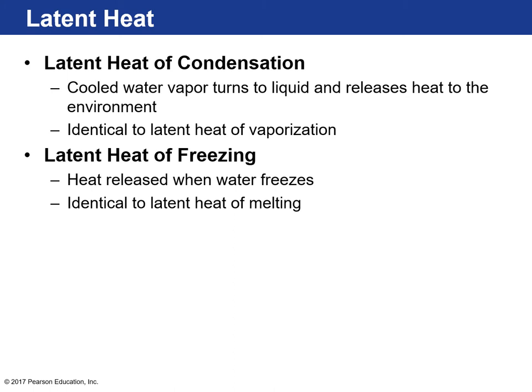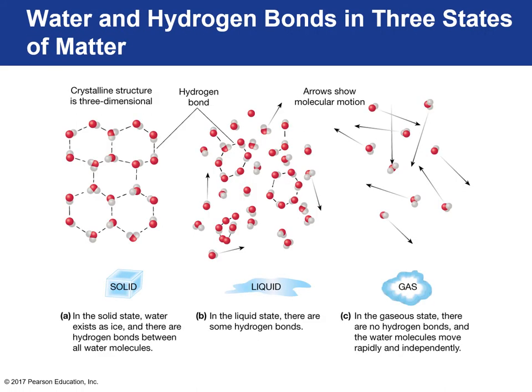The latent heat of condensation: cooled water vapor turns to liquid and releases heat into the environment — it's the same as latent heat of vaporization but going in the opposite direction, from gas to liquid. The latent heat of freezing: heat is released when water freezes — going from liquid water to solid releases heat — and that is equivalent to the latent heat of melting.